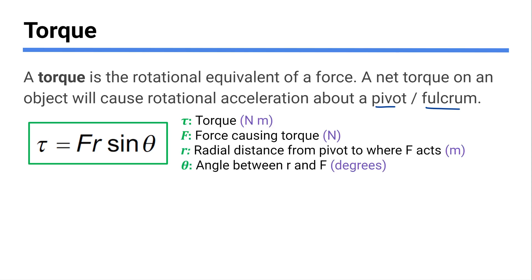Here's your data booklet equation for how much torque a force causes. We're using the Greek letter tau — a squiggly-looking T — for torque. Torque is measured in newton meters, because we're multiplying a force by a distance.